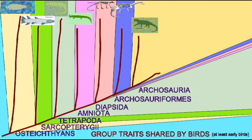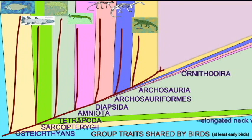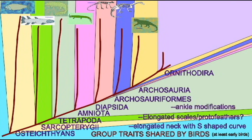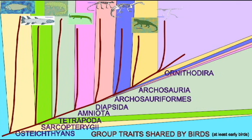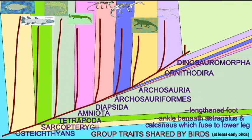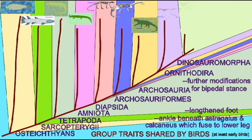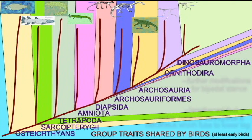but rather these are modifications of bones and muscles which had existed long prior in many groups which did not fly. One of the great modifications which occurred in the ancestors of the dinosaurs was that of a bipedal form of locomotion.